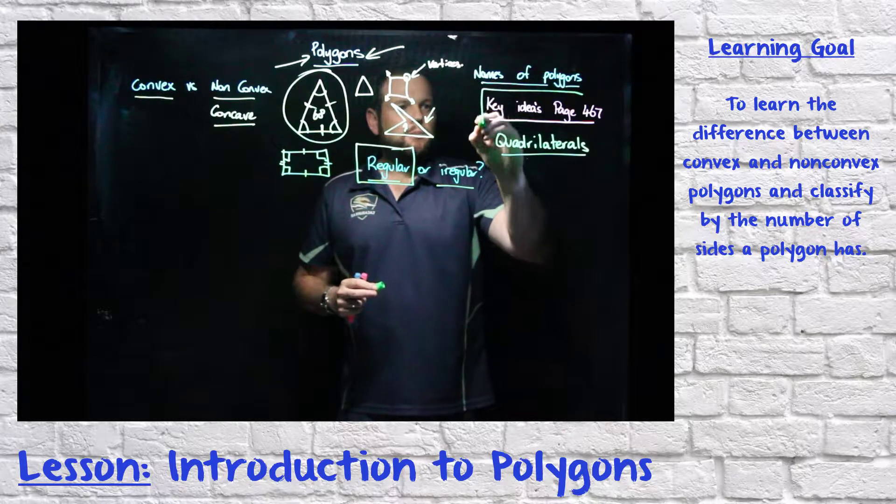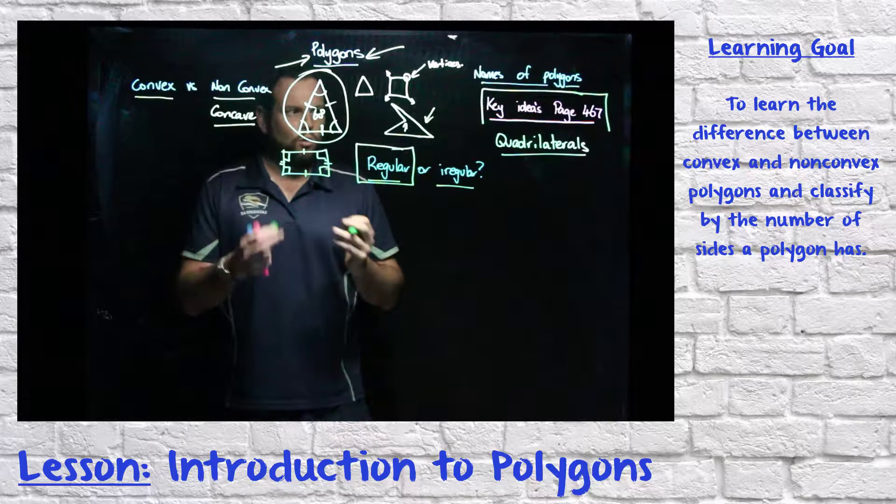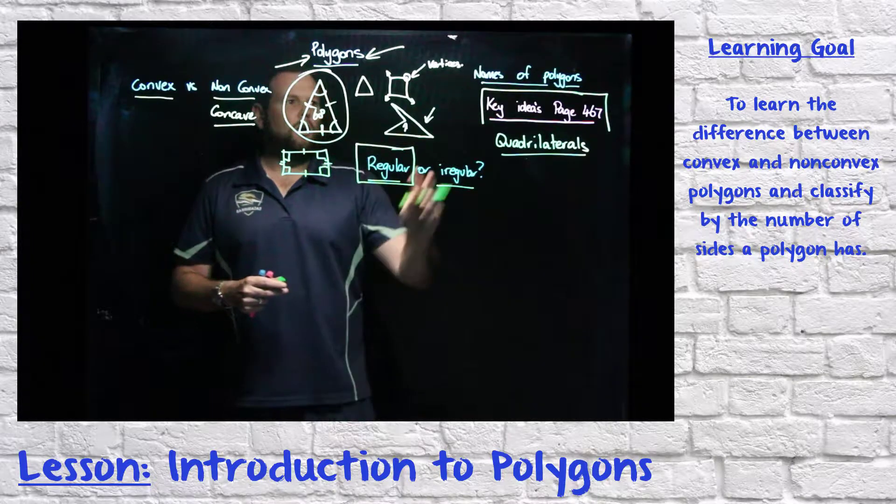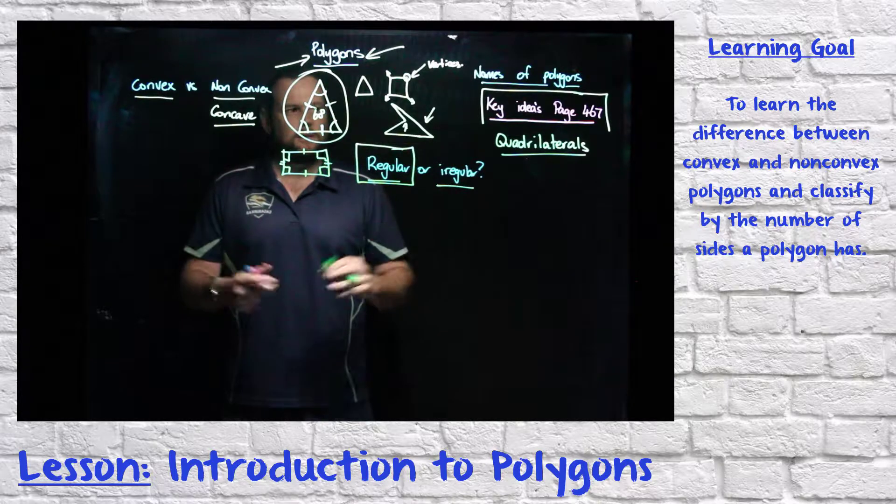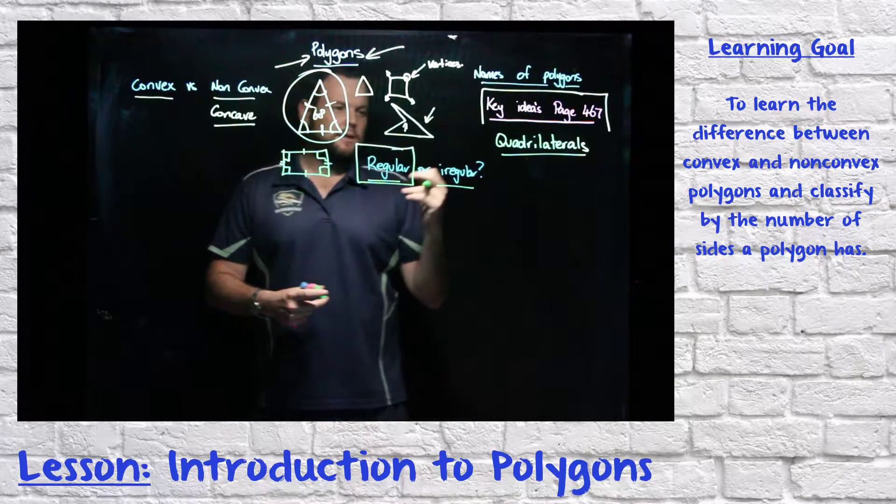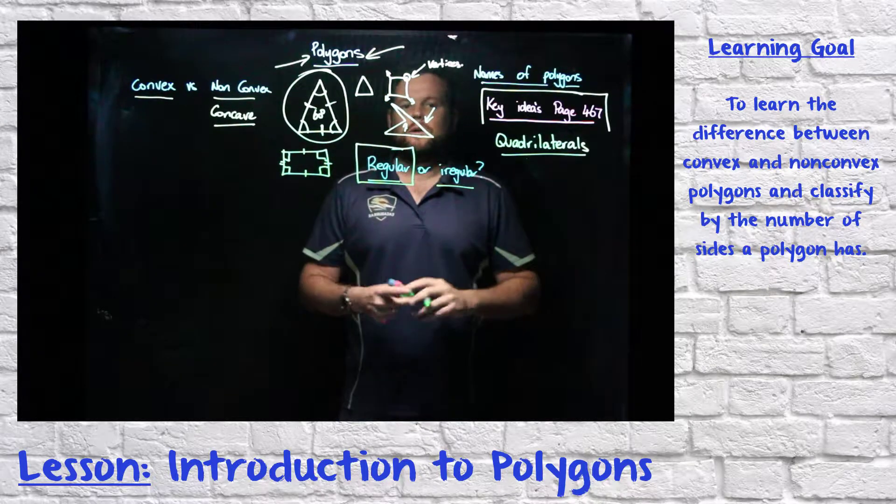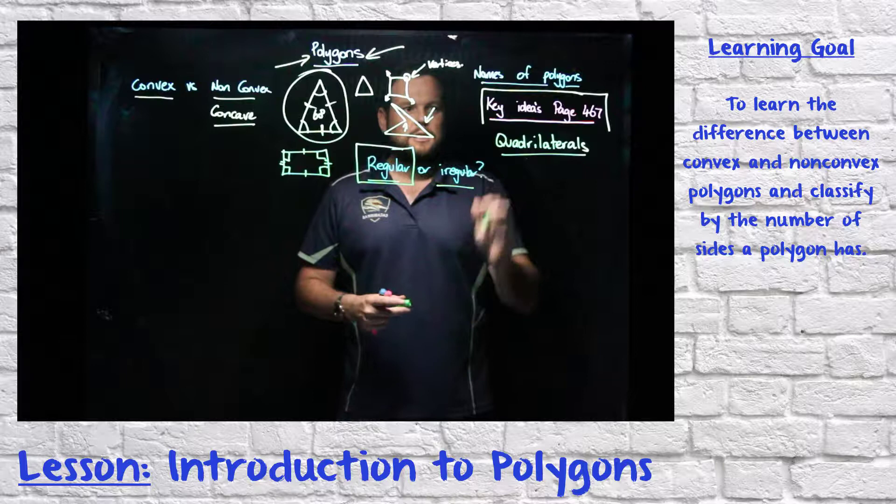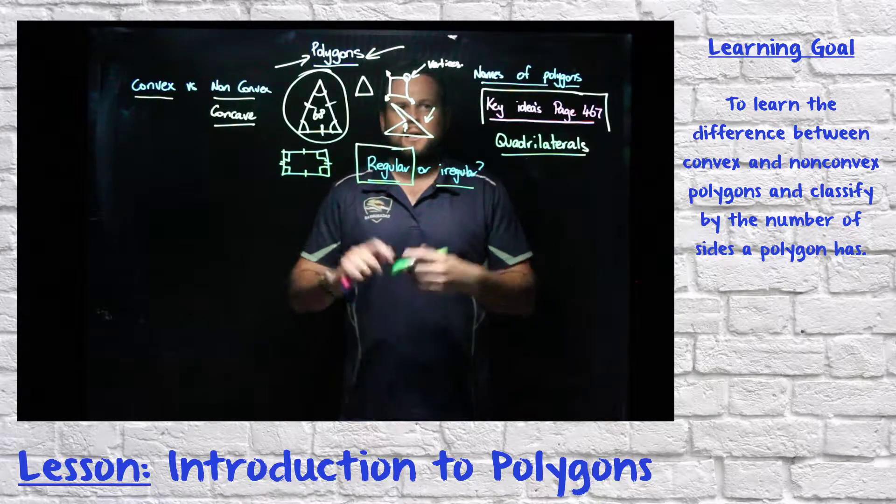These key ideas on page 467 are really important. They have all of the different types of polygons when we name them by the number of sides. There'll be ones in there like hexagons and septagons and octagons that you're familiar with already. But you need to check those and make sure that you know which names they are.